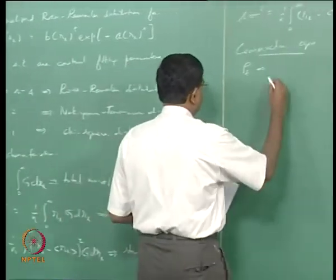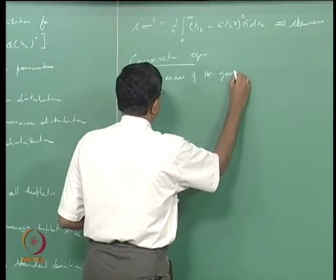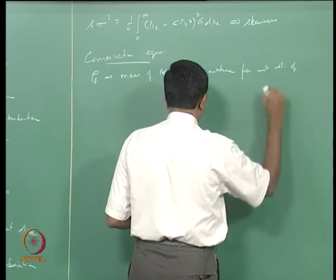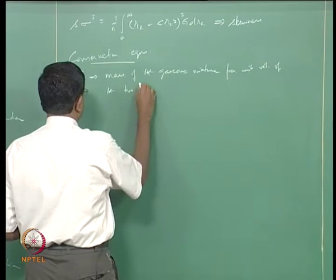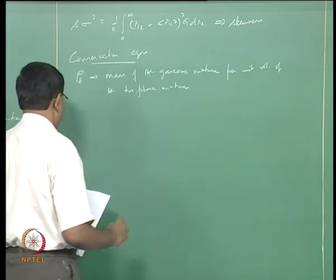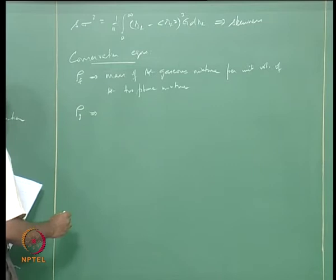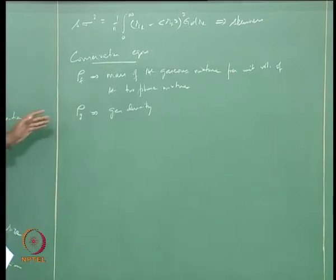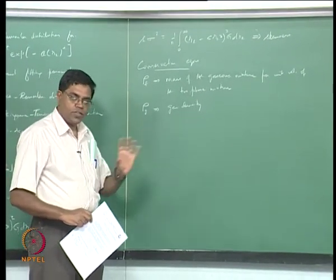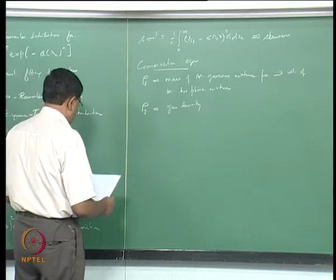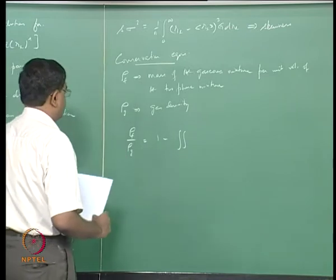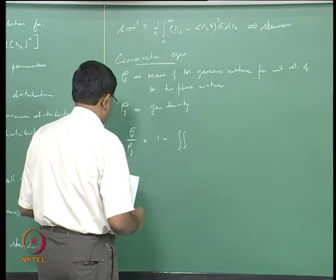ρ_g is the gas density — it does not take into account the two-phase part. So ρ_f divided by ρ_g equals 1 minus a double integral (taking into account different velocities for different droplets) of (4/3)π R_L³ times f dR_L dU, where the double integral goes over the spray distribution function.